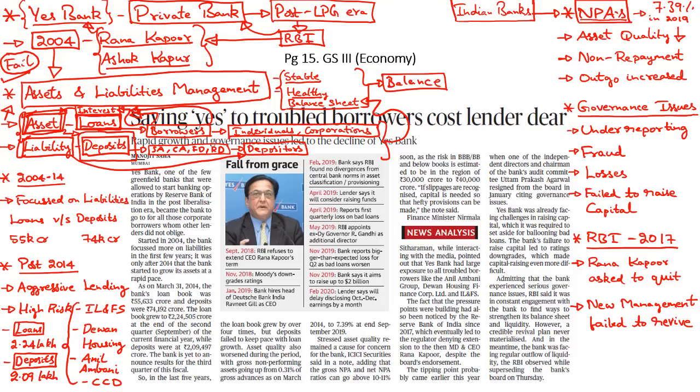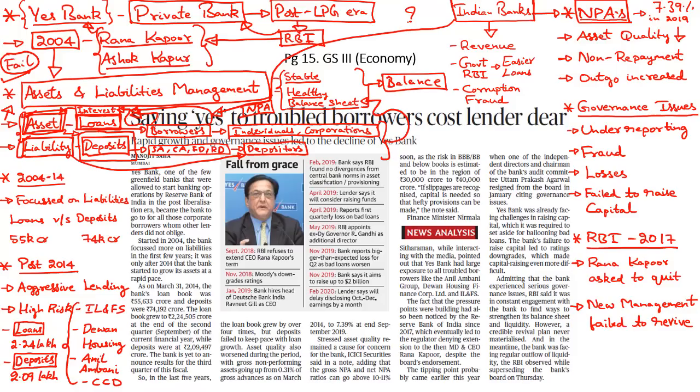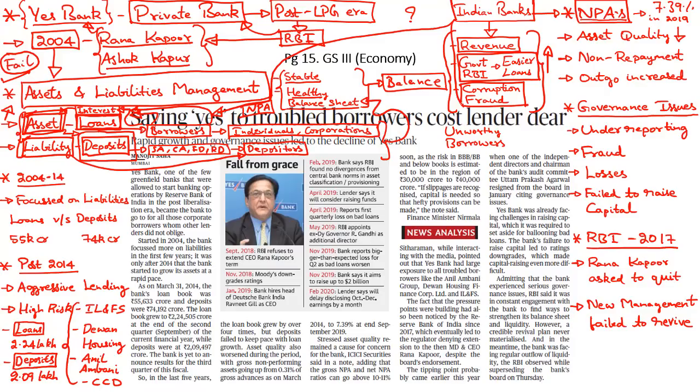Now you might ask why the failed bank didn't exercise adequate caution while giving out these risky loans which were bound to turn into non-performing assets. The answer lies in three factors. Since loans are an asset to the bank, banks are generally motivated to give out easier loans to generate more revenue. Then the government and the RBI might encourage banks to give out easier loans to promote economic growth. And the third most important reason is corrupt and fraudulent practices within the bank's management, as a result of which they give out huge loans to unworthy borrowers despite being aware of their inability to repay. It is a combination of these factors which pushes a bank to default on its payments.